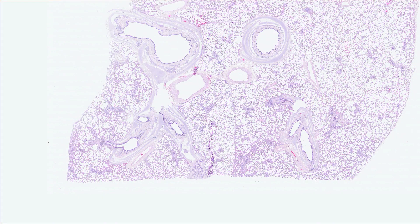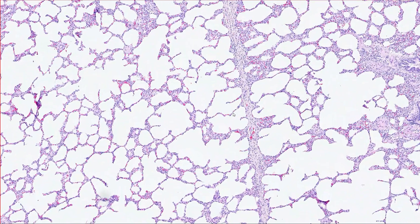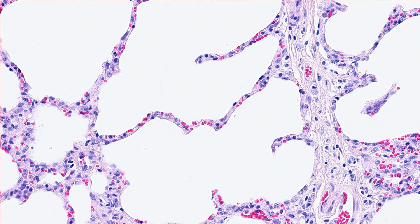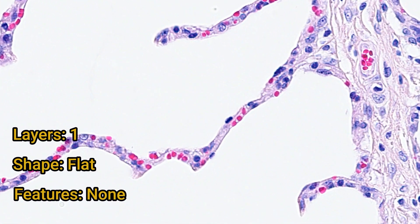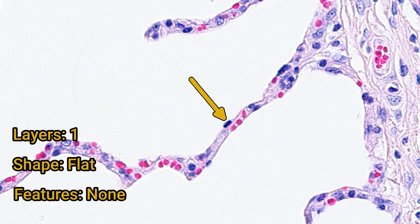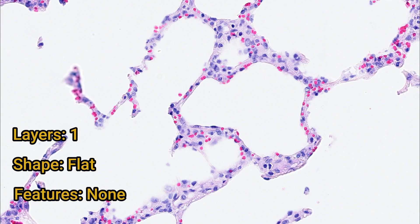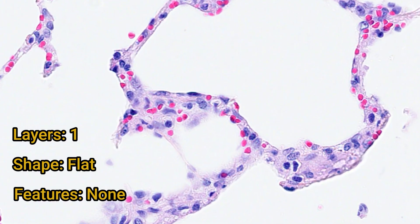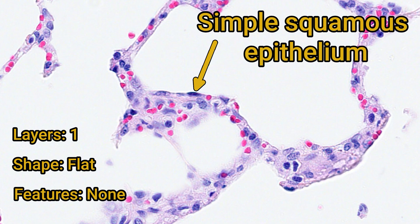Let's begin our journey in the lungs. There's lots of white space here that must be lined by epithelium. Looking at the alveoli, you can sometimes see a little flat nucleus sticking out into the alveolar airspace — this is the epithelium. There's a single layer, they're flat, and they have no special features. Epithelium with these characteristics is called simple squamous epithelium. You'll often find this type in areas where the body is trying to minimize the distance for diffusion, like the lung. These cells are so flat and thin they're impossible to see via light microscopy unless you slice through the nucleus.